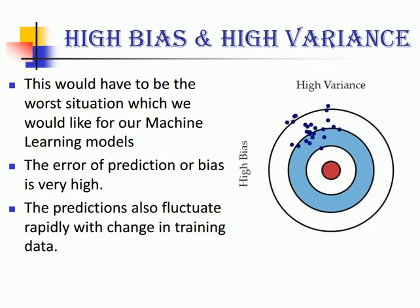A situation that should never occur in your life is high bias and high variance. Here the error of prediction is very high, plus whatever predictions are coming out fluctuate rapidly with change in training data.